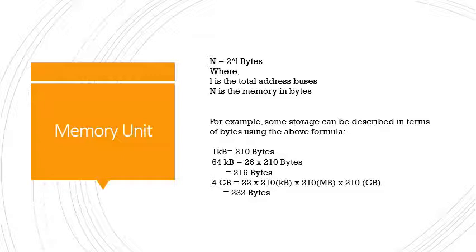Let us have a review on two things: the memory address register and the memory data register. The memory address register stores the address of the memory location where the operation is being performed. The memory data register stores the data on which the operation is being performed. This review helps to have a clear idea on the operation of memory.